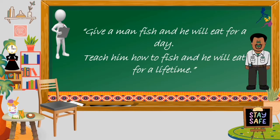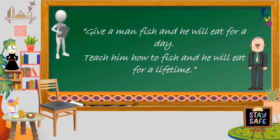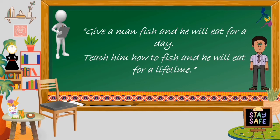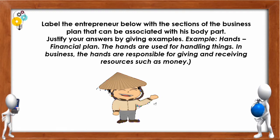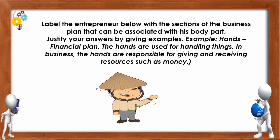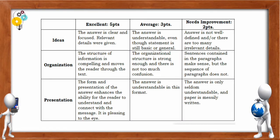Let's reflect and value this: 'Give a man a fish and he will eat for a day. Teach him how to fish and he will eat for a lifetime.' For additional learnings, label the entrepreneur below with the sections of the business plan that can be associated with his body. Justify your answers by giving examples. For example, Hands — Financial Plan: the hands are used for handling things; in business, the hands are responsible for giving and receiving. Here's your rubric — make sure to follow the directions.